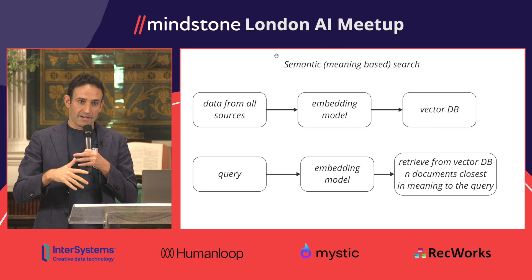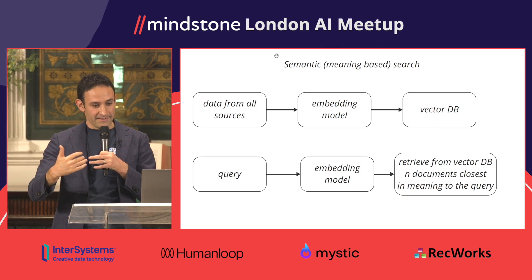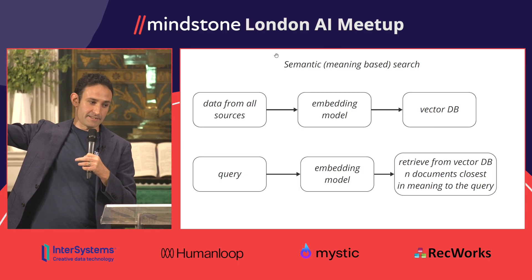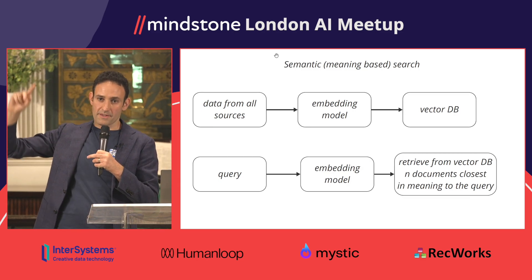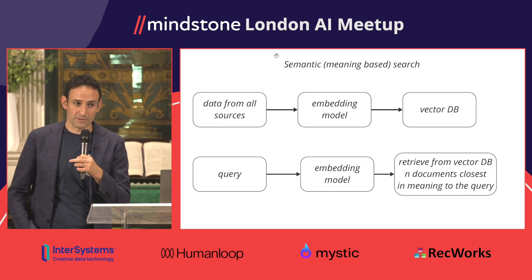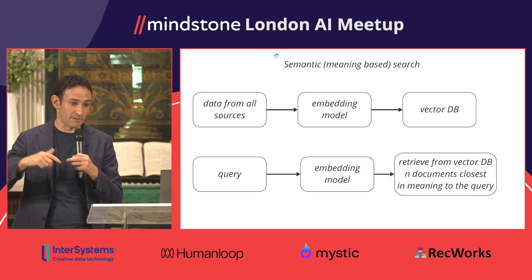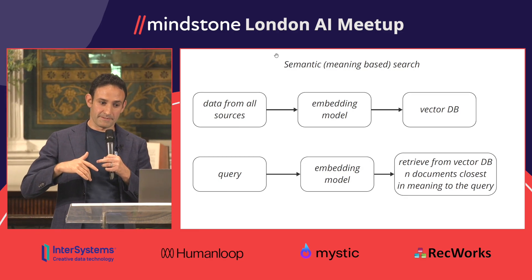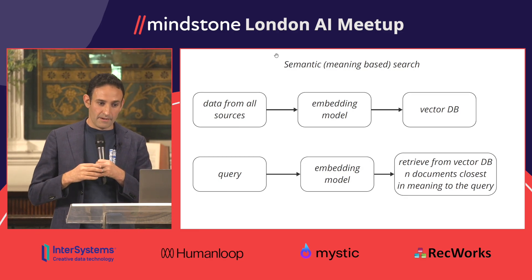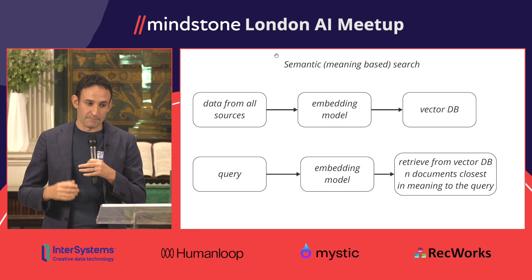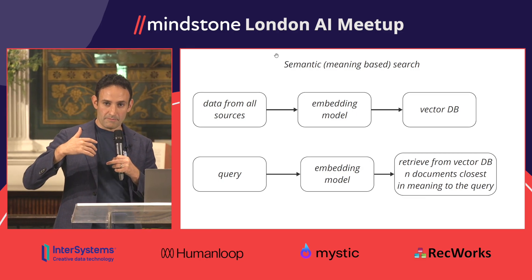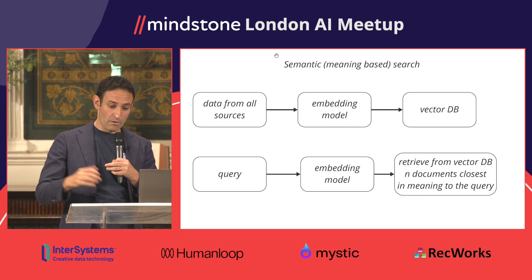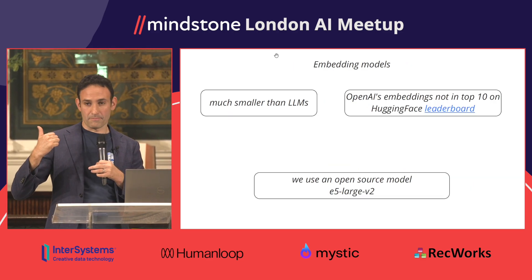When you get a query like 'how do I get a ride,' you pass it through the same embedding model, see where it lands in the vector space, and look for the nearest documents. Those documents will be similar in meaning to your query. You return those documents from your vector database or index, and you can use those search results directly or pass them on to a large language model.